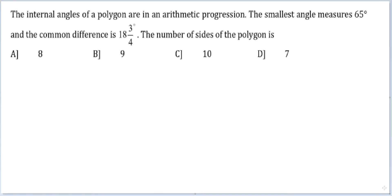Let's look at this question. The internal angles of a polygon are in an arithmetic progression. The smallest angle measures 65 degrees and the common difference is 18 3/4 degrees, or 18.75 degrees. The number of sides of the polygon is: